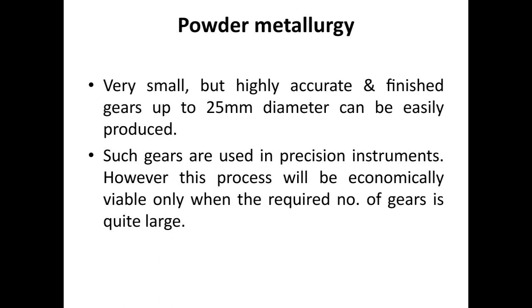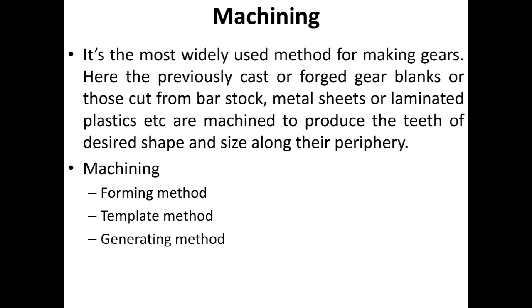Powder metallurgy: very small but highly accurate and finished gears up to 25 mm diameter can be easily produced. Such gears are used in precision instruments; however, this process is economically viable only when the required number of gears is quite large. Machining is the most widely used method for making gears, where previously cast or forged gear blanks cut from bar stock, metal sheets, or laminated plastics are machined to produce the teeth.